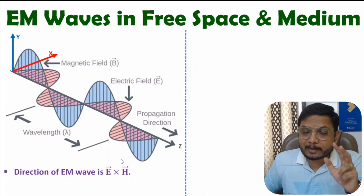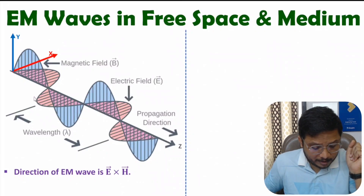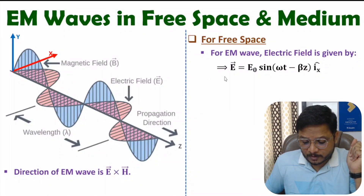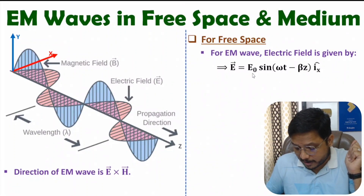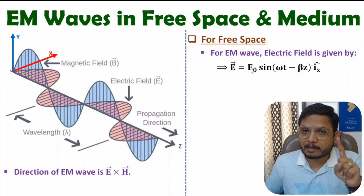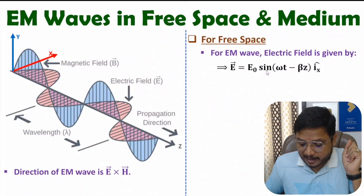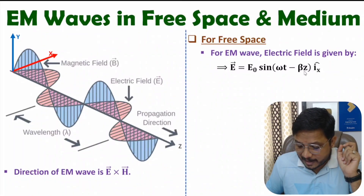Now I will explain electromagnetic waves in free space first. In free space, you can observe this oscillation of electric field propagating towards Z direction. For free space, the electric field is oscillating with respect to the X-axis — that's why the unit vector Iₓ is mentioned. E₀ is the maximum oscillation magnitude. The equation is E₀ sin(ωt − βz), where omega is angular frequency and beta is 2π/λ, with Z as the direction of propagation.